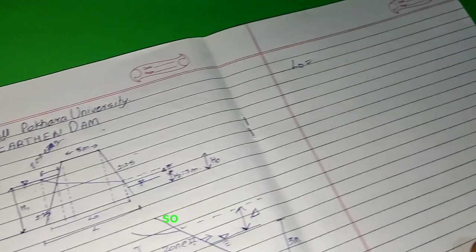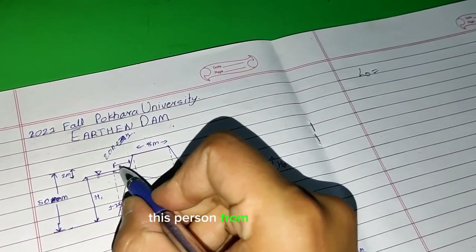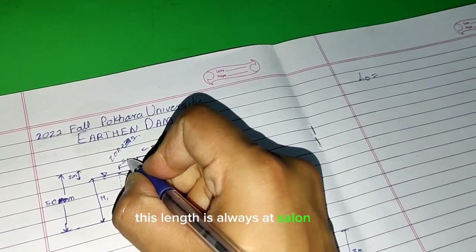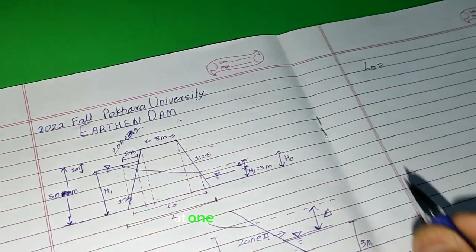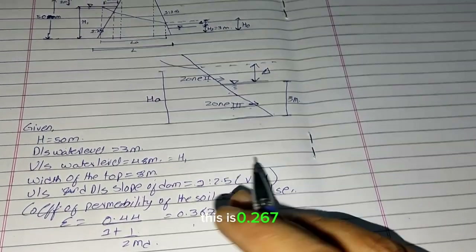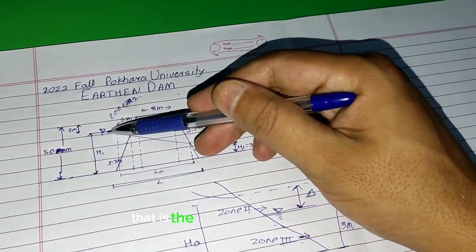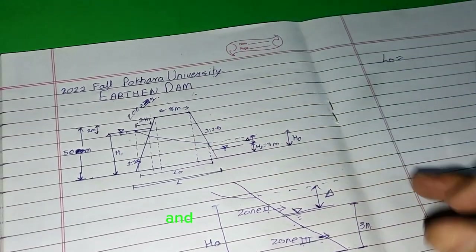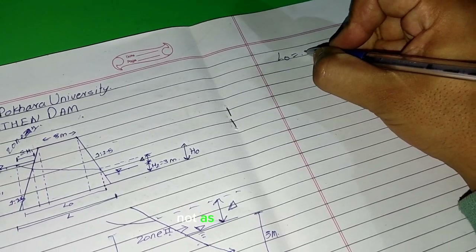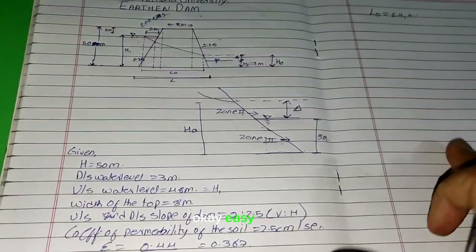We have to know that this portion's length is always epsilon times h₁. We have epsilon here, which is 0.367, and h₁ is the height of the upstream water level. So we get L₀ as epsilon times h₁.